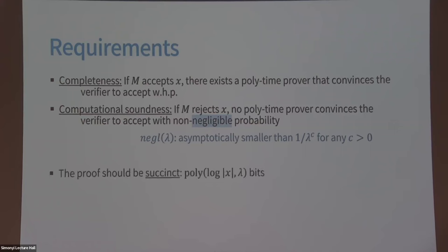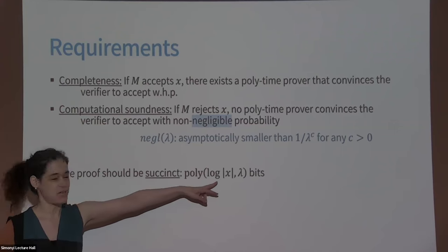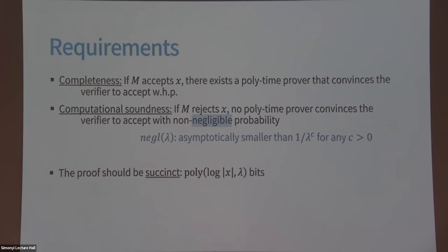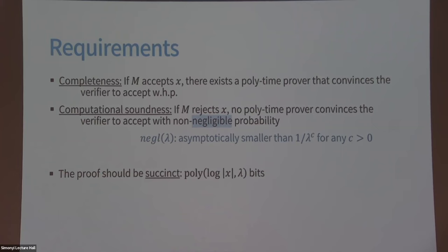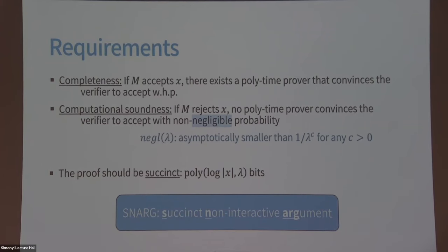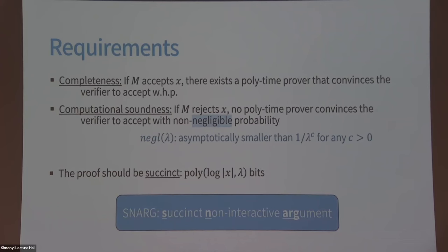The proof should be short — polylogarithmic in the input length and polynomial in the security parameter. This is often referred to as a SNARG: Succinct Non-Interactive Argument. The crypto community is amazing at coming up with acronyms.